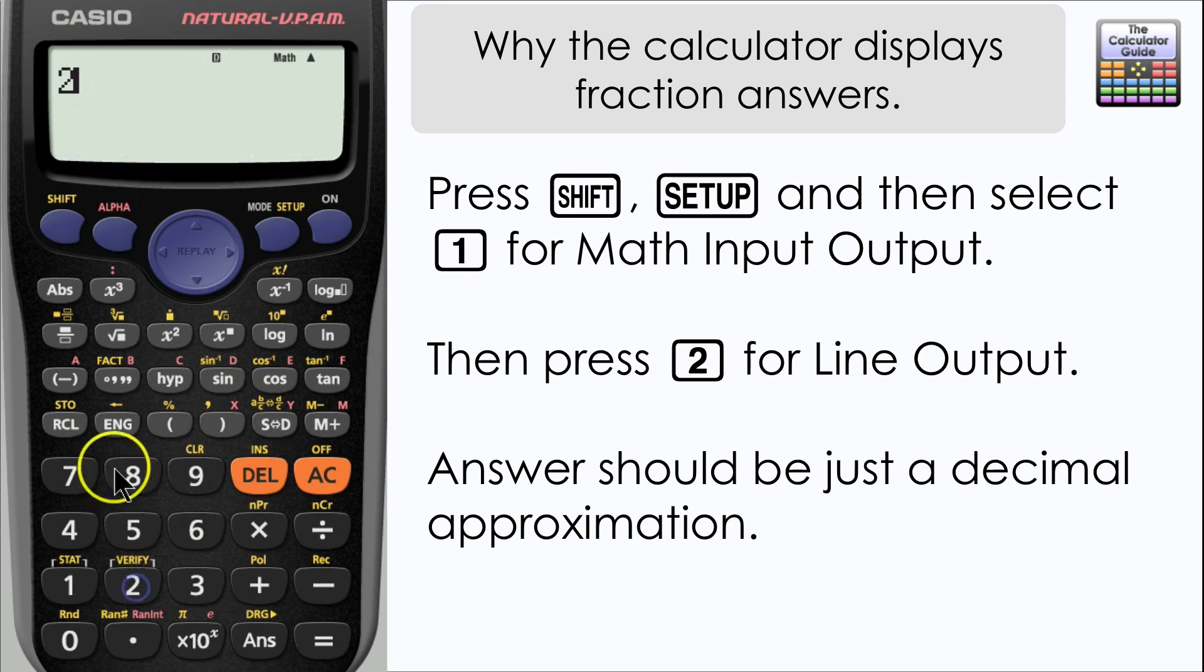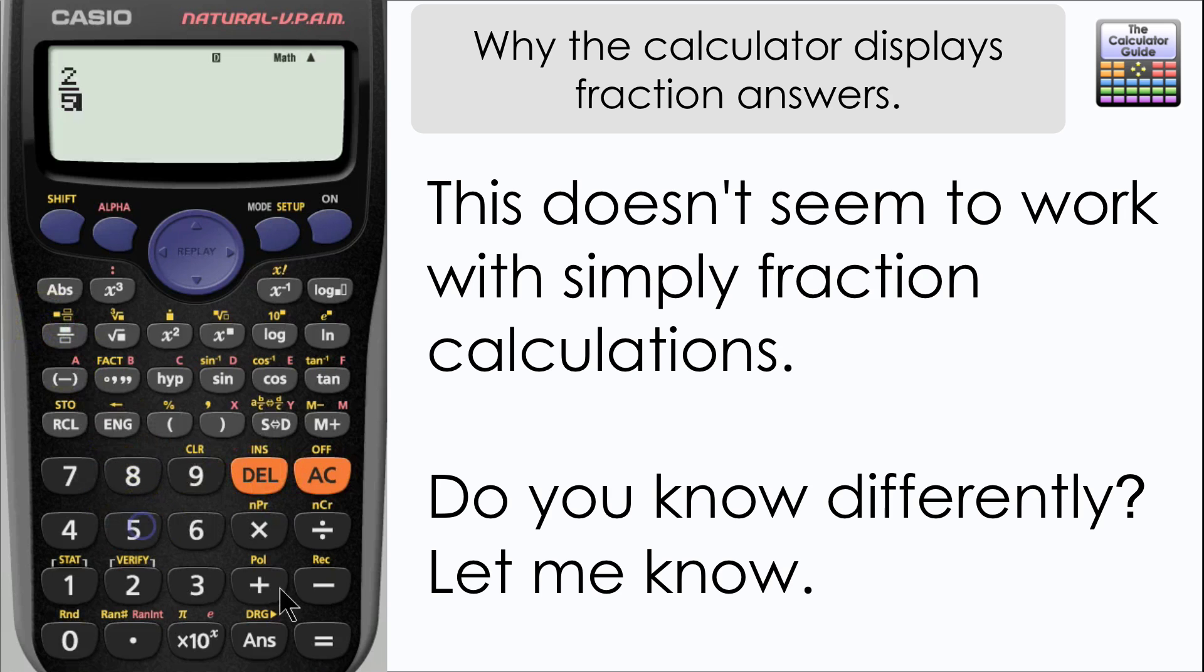If I input say two-fifths and press equals, I still get the two-fifths answer initially. I'd have to press SD to get the decimal. Even if I do a calculation, let's say a simple calculation like add another two-fifths, I'm still getting a fraction answer in the first instance.